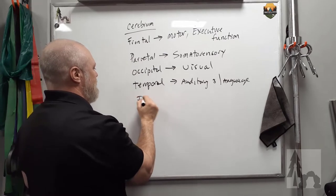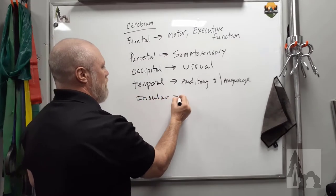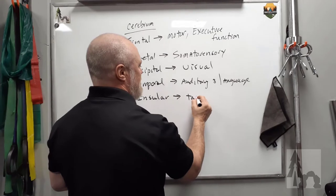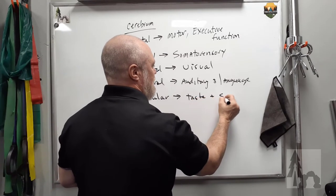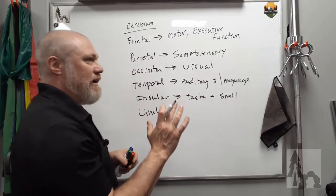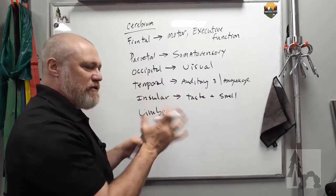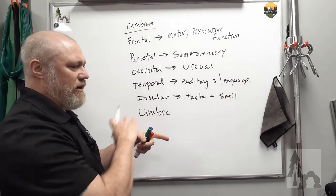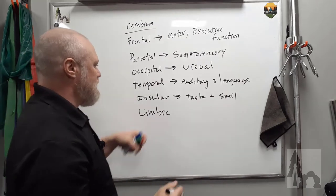Then you're going to have your insular lobe. That's going to be your chemical senses. Think taste and smell. And then the limbic lobe, that one that's on the interior, on the inner surface or the medial surface of the brain, just running parallel to the cingulate gyrus.